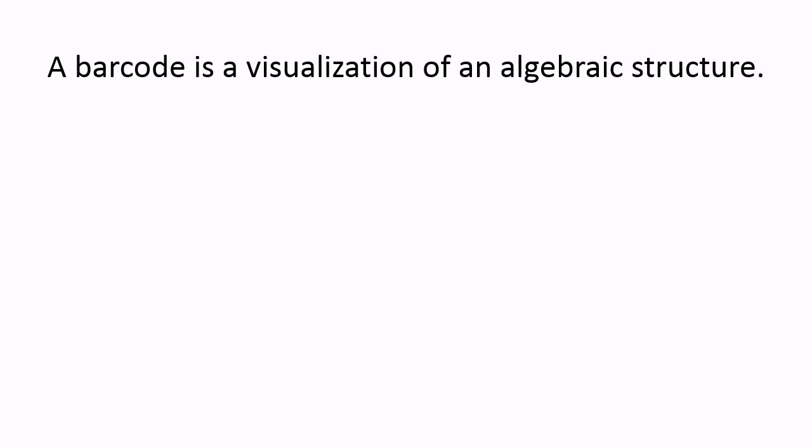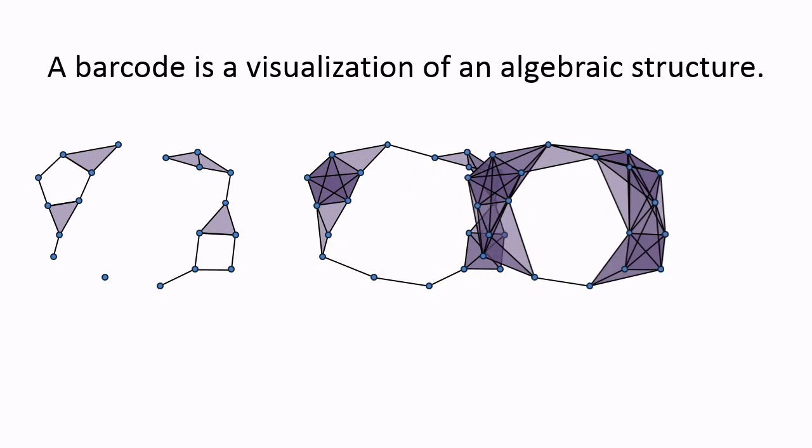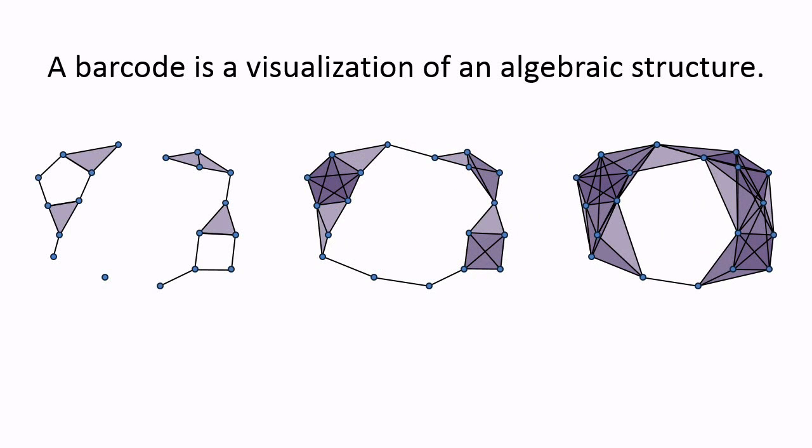Persistent homology has been studied extensively from an algebraic perspective. Specifically, a barcode is really a visualization of an algebraic structure. In our barcode animation, we were really dealing with a sequence of simplicial complexes, each a subcomplex of the next. That is, the simplicial complex constructed from the data for some small distance is a subset of the simplicial complex constructed for a larger distance.